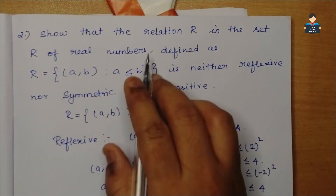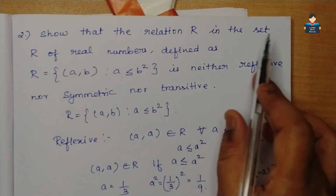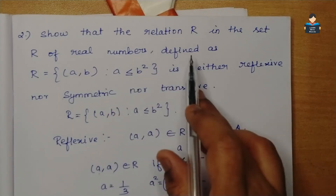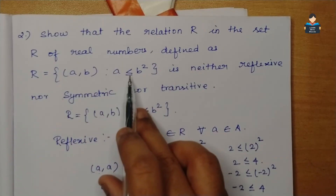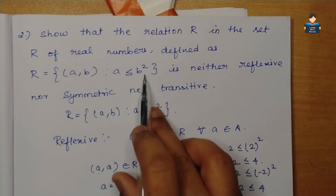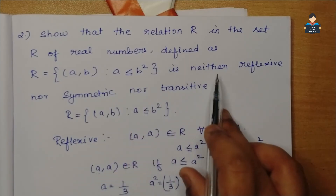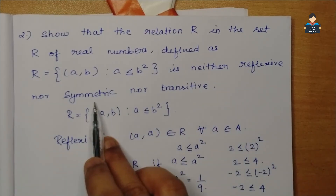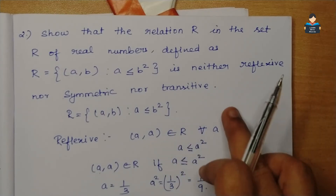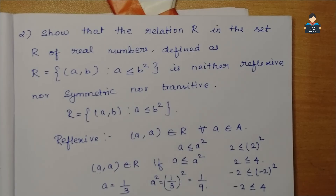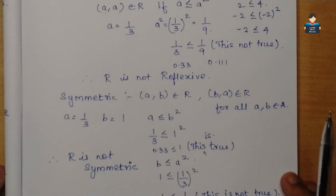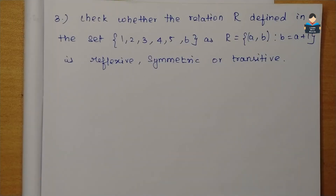So we have shown that the relation R in the set of real numbers defined as R = {(a,b) : a ≤ b²} is neither reflexive, nor symmetric, nor transitive. Exercise 1.1 Question 2 is proved. Now we move on to Question 3.